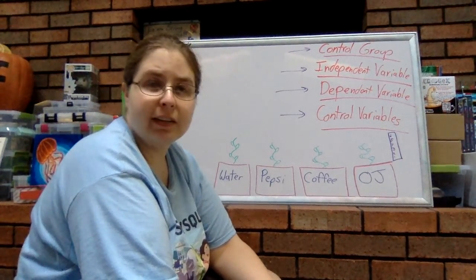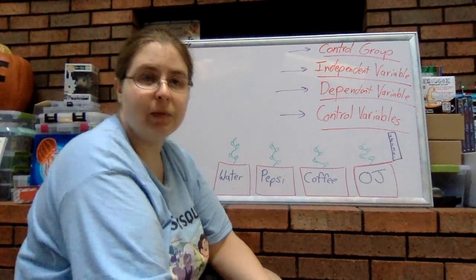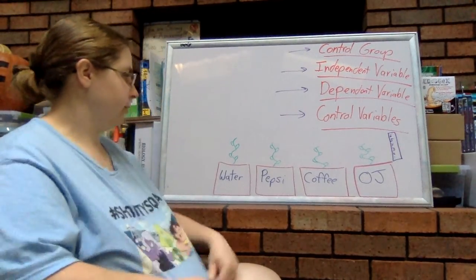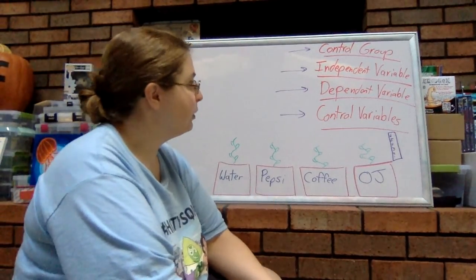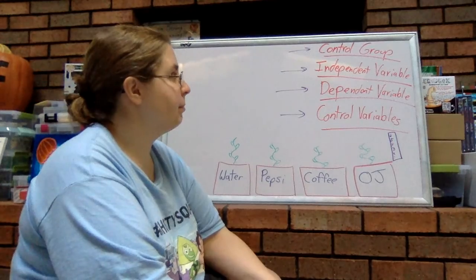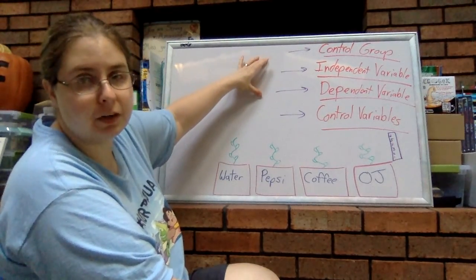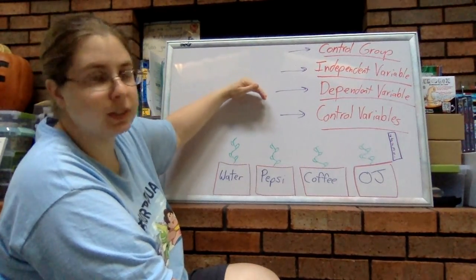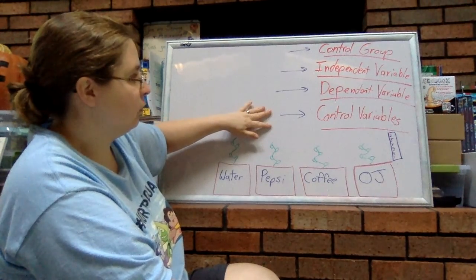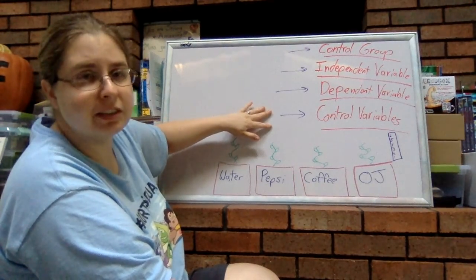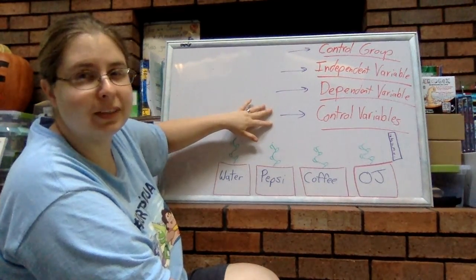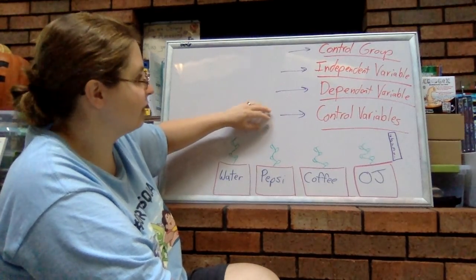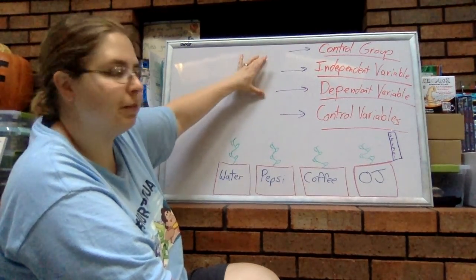As we know, the next step is to experiment. So how do we set up a good experiment? Well, there are four things we need to keep in mind. The first three are ones we definitely talk about in class. This last one we don't necessarily cover in our notes, but it doesn't mean it's not important — it is super important.